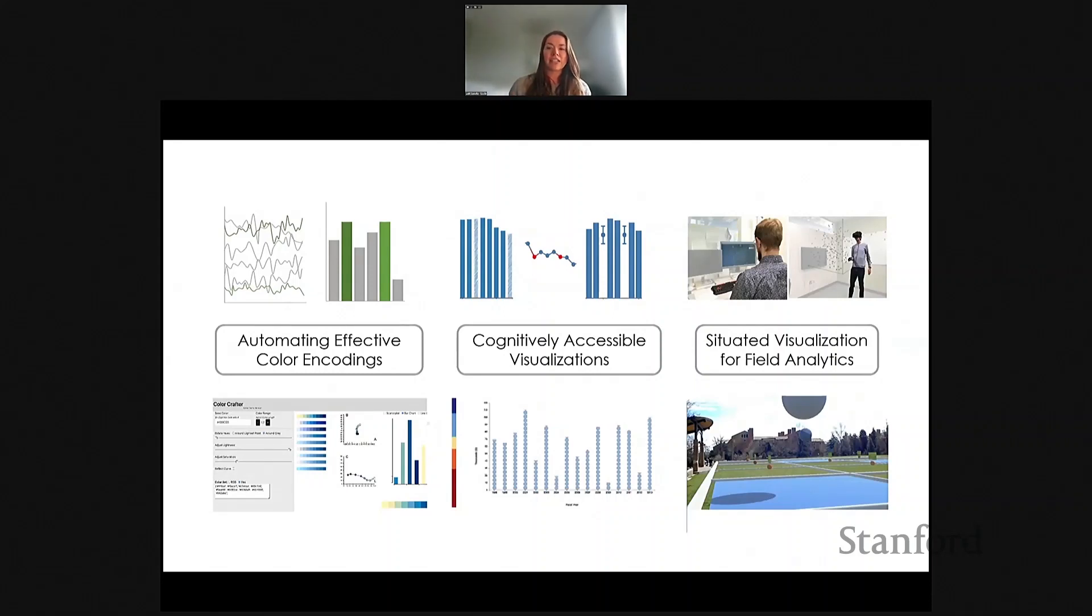These areas - the first is automating effective visualization design. This is a problem that pervades across domains, and it's where I'll spend most of my time today. The second investigates the cognitive barriers that current visualization practices create, trying to figure out how we can make data more accessible for people with intellectual and developmental disabilities, in the context of fiscal self-advocacy. The last thread explores how augmented reality, mobile data, cloud computing, and immersive analytics all come together to support situated data analysis in field operations in earth science and emergency response.